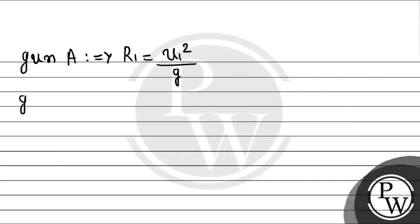If we talk about gun B, the maximum range covered R2 will be equal to u2 squared by g.